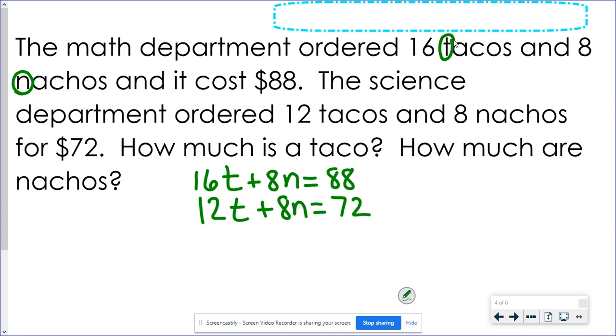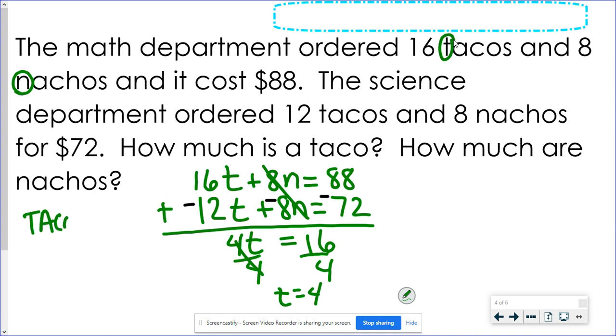If I add my equations together right now nothing's going to go away. However, if I would multiply my second equation by negative 1. Now the N's are going to go away. 16T minus 12T is going to be 4T. And 88 minus 72 or plus a negative 72 that'll be 16. I'm going to get T equals 4. So that means that the tacos cost $4. I'm going to write that down. And please show how smart you are. Put the dollar sign in front of the number not after.